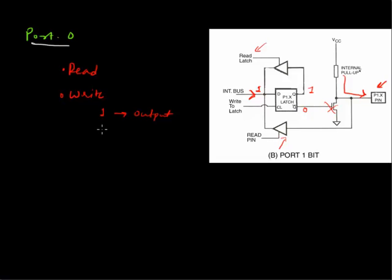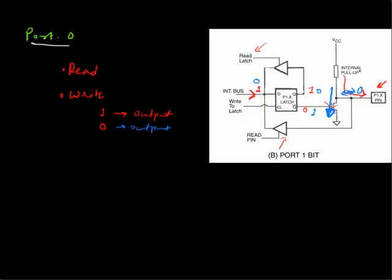To write a 0: the internal bus writes a 0. Then the Q output is 0 after the instruction executes, Q-bar turns 1, and the FET is turned on — meaning VCC flows to ground. So the status at the pin will be 0 and the output data 0 is transferred to the pin. This is how 0 is output.